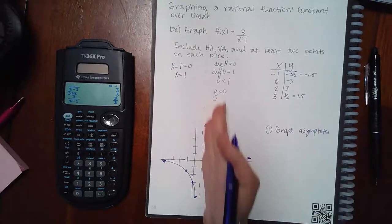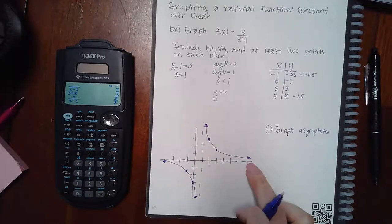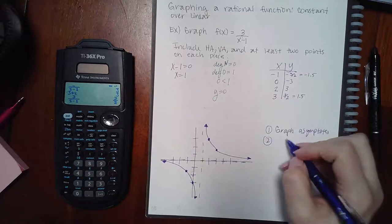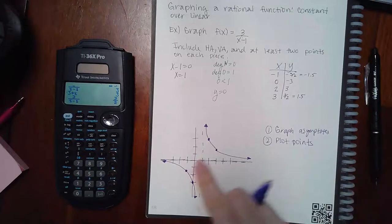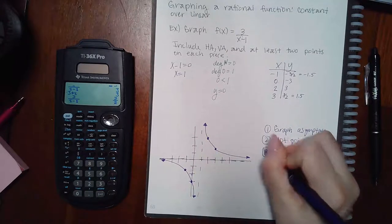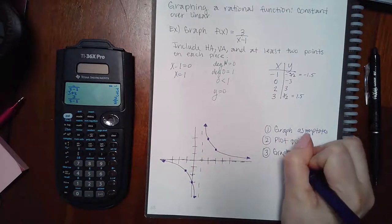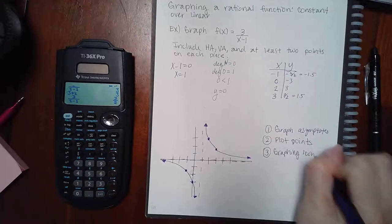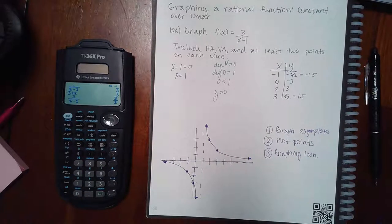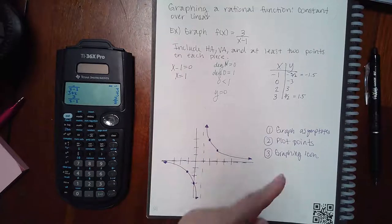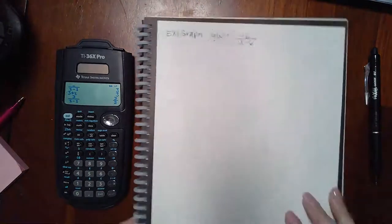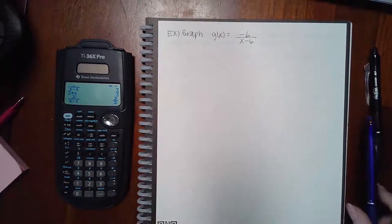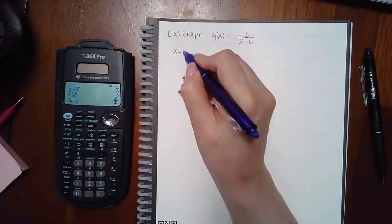Put a dotted vertical line at x = 1 and a dotted horizontal line at y = 0. Then plot the points — two on each side — and hit the graphing icon. It will draw the curves for you; you don't have to figure out whether it goes up or sideways.